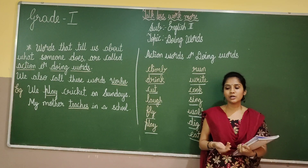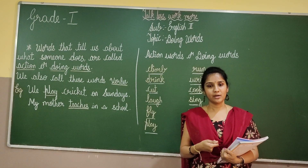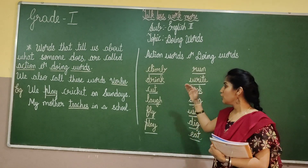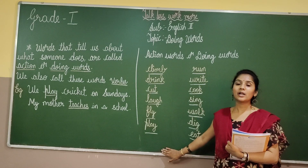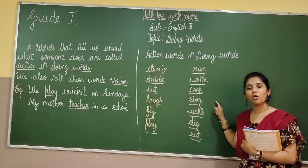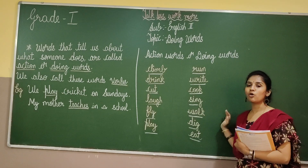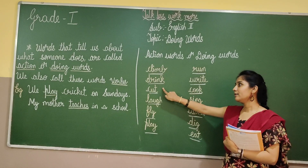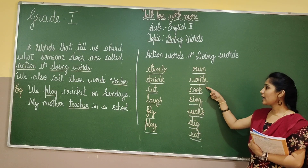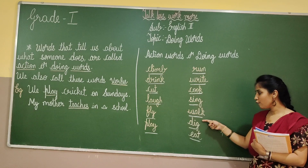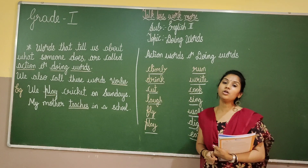Eat — when you start eating, you need to take a plate, serve something, then start eating; your hands are moving. That's why eat is also an action word. So all these words — climb, drink, cut, laugh, fly, play, run, write, cook, sing, walk, dig, eat — are doing words or action words.